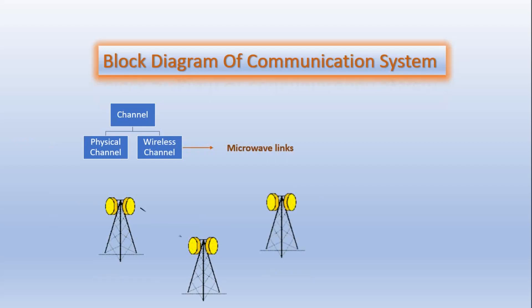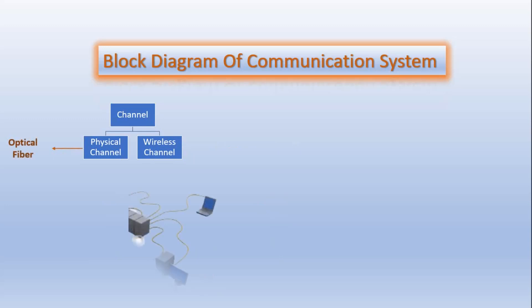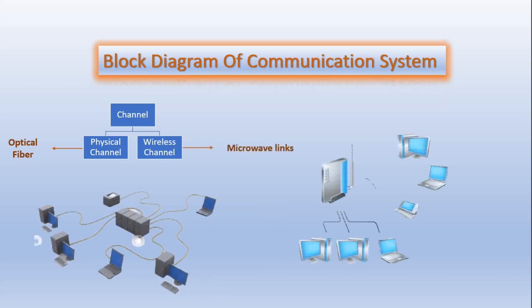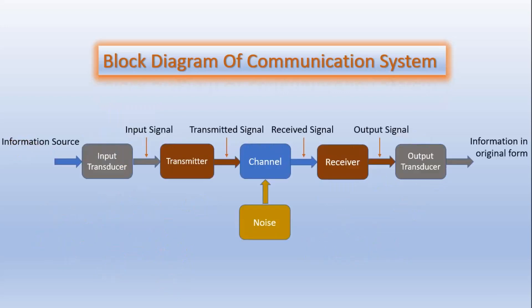Although these channels operate differently, they all provide a physical medium for the transmission of signals from one point to another point. Therefore, for these channels, the term point-to-point is used. On the other hand, the broadcast channels provide a capability where several receiving stations can be reached simultaneously from a single transmitter.